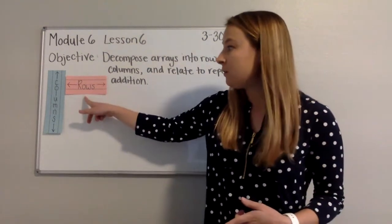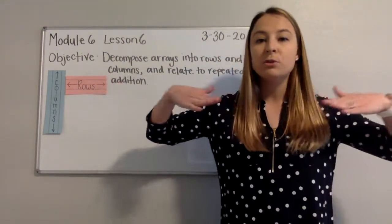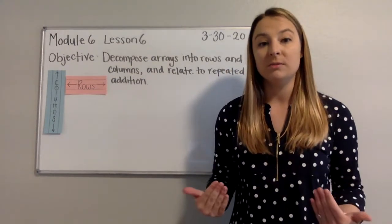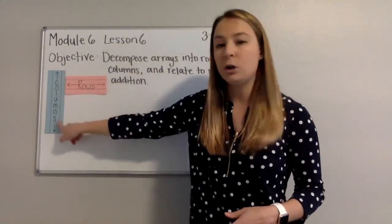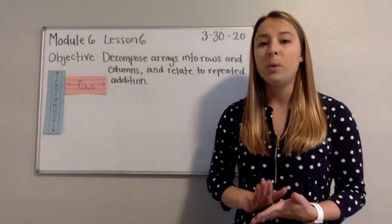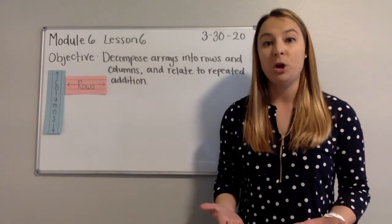Quickly, our rows, if you remember, go left to right. Rows go side to side. Think of those rows in a movie theater, the rows of seats. Columns go up and down. Okay, so when we're looking at our arrays today, don't get mixed up on which direction rows and columns go in.